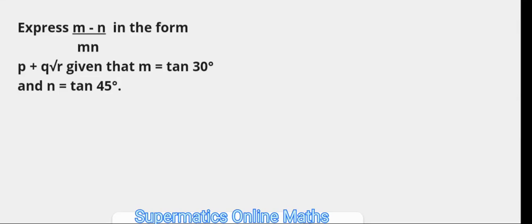Hi, welcome to my YouTube channel, Supermatics Online Maths. In today's math tutorial, I will be solving some math problems that have to do with trigonometric substitution. The first problem is to express m minus n over the product of m and n in the form p plus q times the square root of r, given that m equals tan 30 degrees and n equals tan 45 degrees.